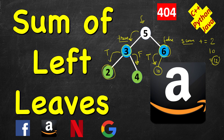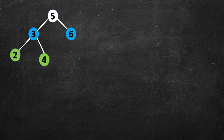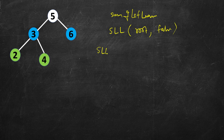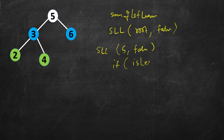Writing the code should be very simple. We have a function - let's call it 'sll' for sum of left leaves - and we pass the root and a boolean flag. The initial call is 'sll(root, false)' since the root itself is not considered a left child.